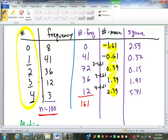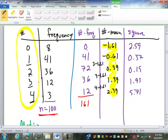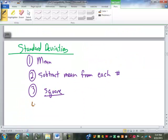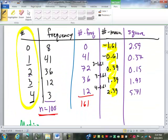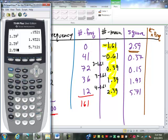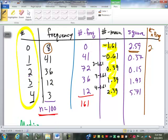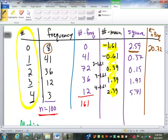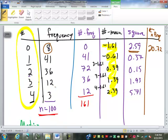Now this next step is where it is slightly different from doing the standard deviation for individual values. We are going to multiply this number by the frequency. The reason we're doing that is this number here, the 2.59 doesn't really occur just once. It occurs 8 times. So square times the frequency. So 2.59 times 8 is 20.72. 0.37 times 41 is 15.17.